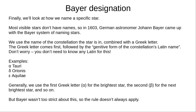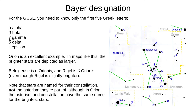We generally use the first letter of the Greek alphabet, Alpha, for the brightest star in a constellation, then the second letter, Beta, for the second brightest star, and so on. But Bayer didn't follow this rule very strictly, so it's not always quite correct. For the GCSE, you only need to know the first five Greek letters — you should learn the name and symbol. In order, they are Alpha, Beta, Gamma, Delta, Epsilon.